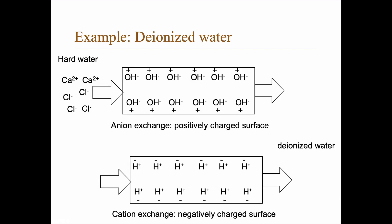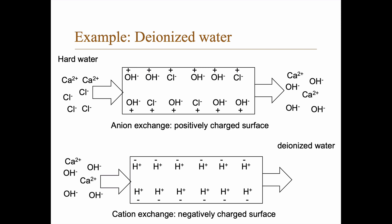Let's take an example of how this can look. To deionize water, you can use anion exchange and cation exchange. First, you put hard water containing calcium ions and chloride ions through an anion exchanger. The chloride ions exchange places with adsorbed hydroxyl ions, and out comes water with only calcium ions and hydroxyl ions. In the next step, a cation exchanger lets the calcium ions exchange with hydrogen ions, and out you get deionized water.